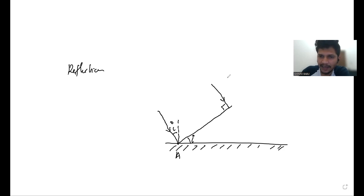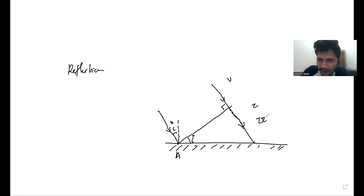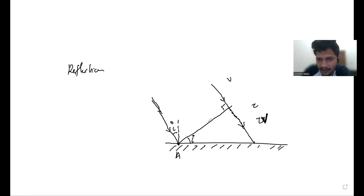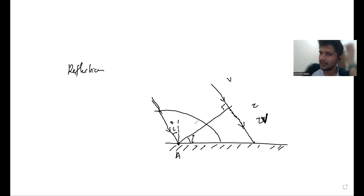This wave is traveling with speed v in the medium. In a given time τ, this ray travels a distance v·τ. In the same time, a secondary wave originating from point A also travels the same distance v·τ. We take a compass and draw an arc of radius v·τ, then from point B draw a tangent to this arc.